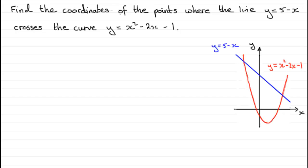And for something like this, we've got the line y equals 5 minus x, which is going to cross the y-axis here at 5. So just mark that in at 5.